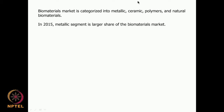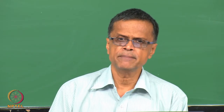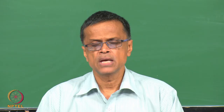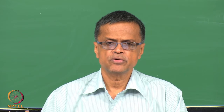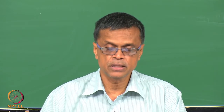The biomaterials market is categorized into metallic, ceramics, polymers, and natural materials. The metallic segment is very large, especially as of 2015. The metallic segment involves stainless steel used in orthopedic plates, titanium used quite a lot in stents and orthopedic joints, titanium alloys where different metals are added to improve certain properties, cobalt-chrome alloys, silver, gold, and platinum. A lot of metals are used as biomaterials for different applications — for antibacterial properties, for wear and tear resistance, and for withstanding high tensile strength.